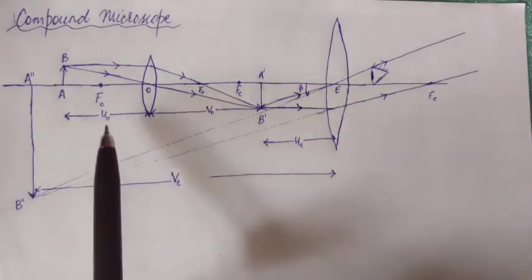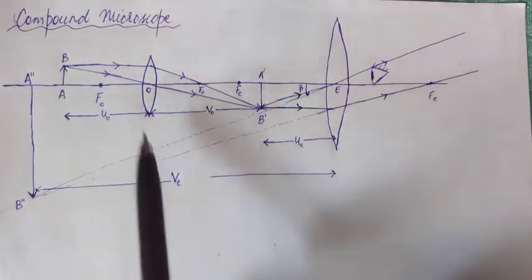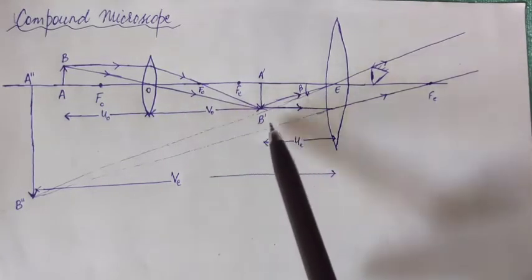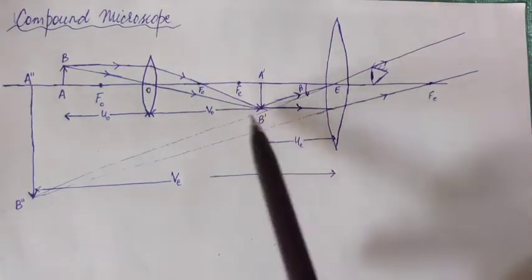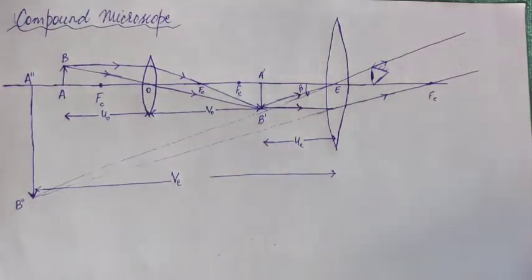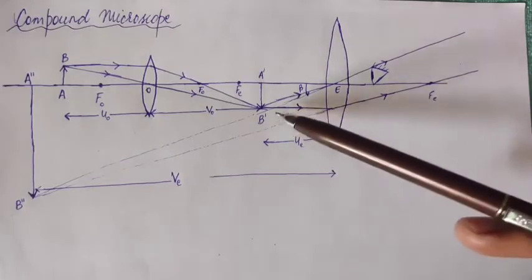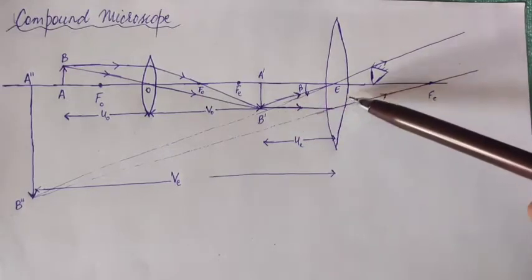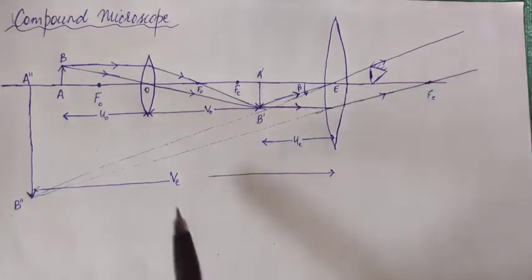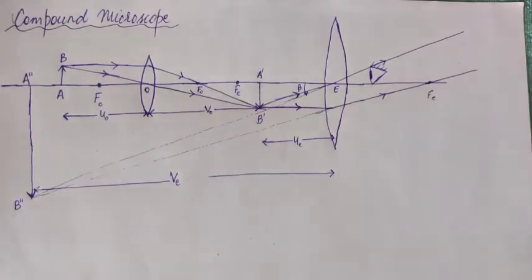U0 is the distance of the object from the objective. V0 is the distance of the image A'B' formed by the objective from its optical center. UE is the object distance for the eyepiece — that is, the distance of A'B' from the eyepiece — and VE is the image distance for the eyepiece.